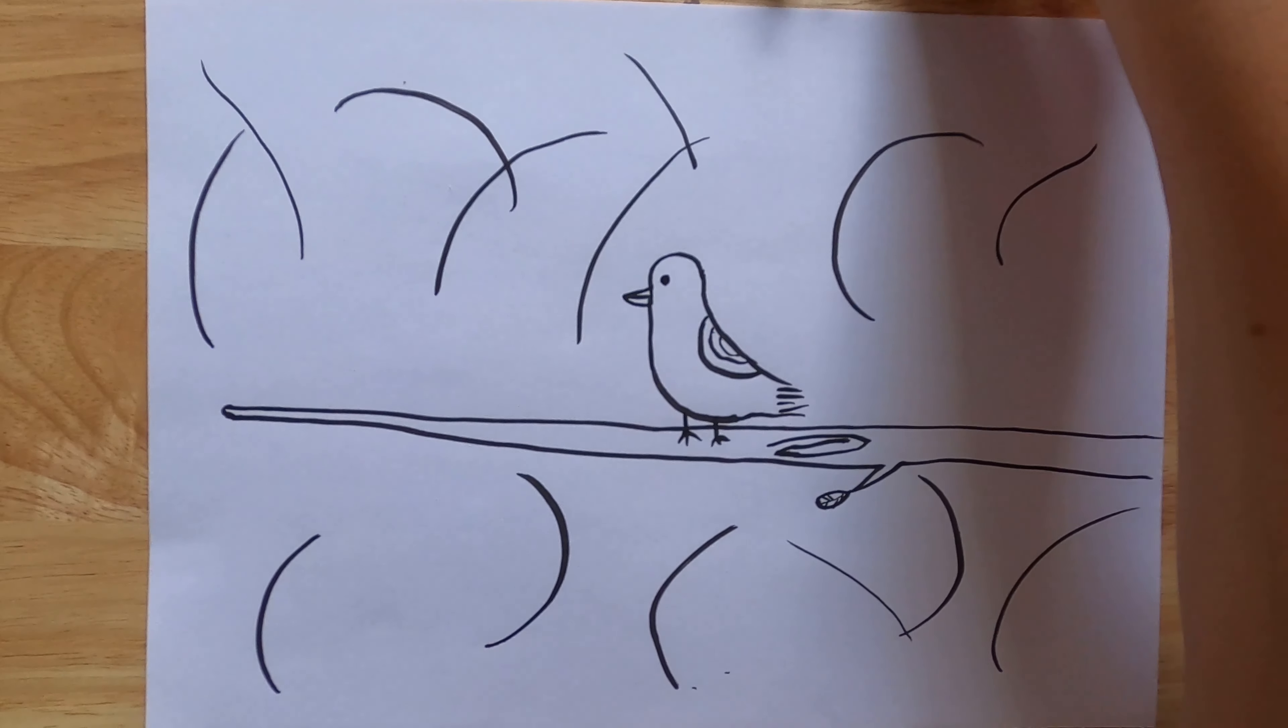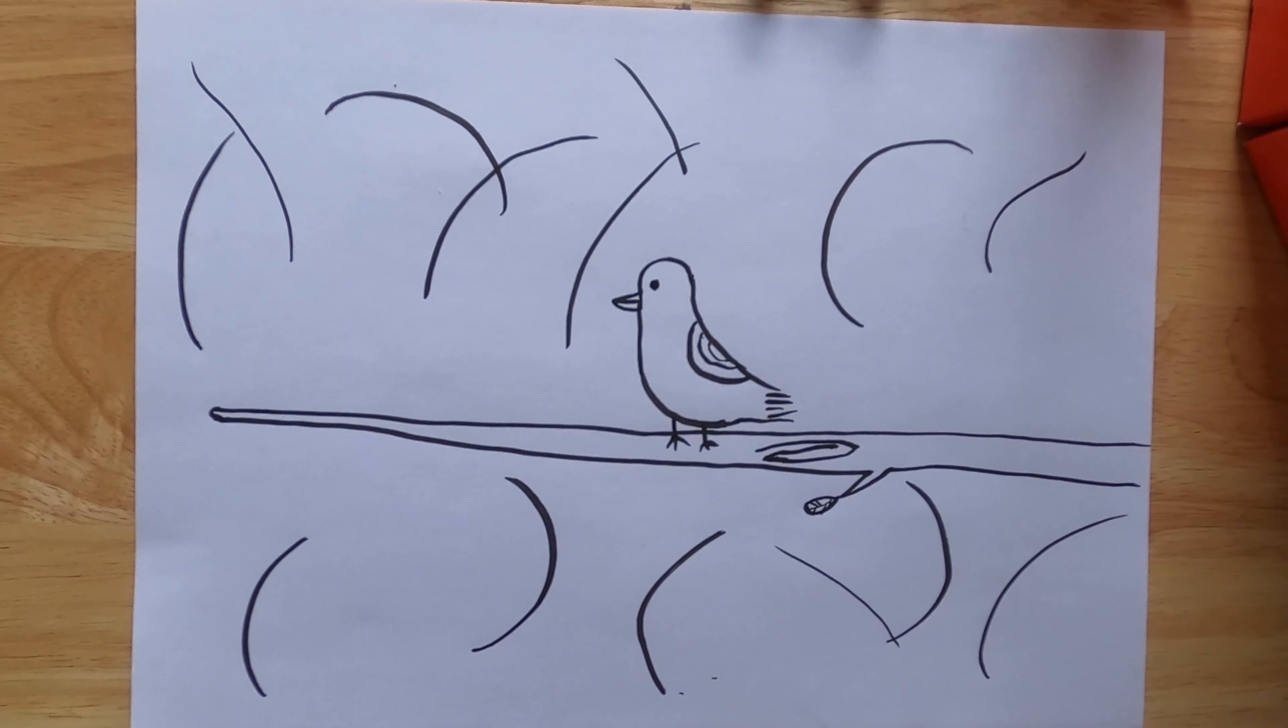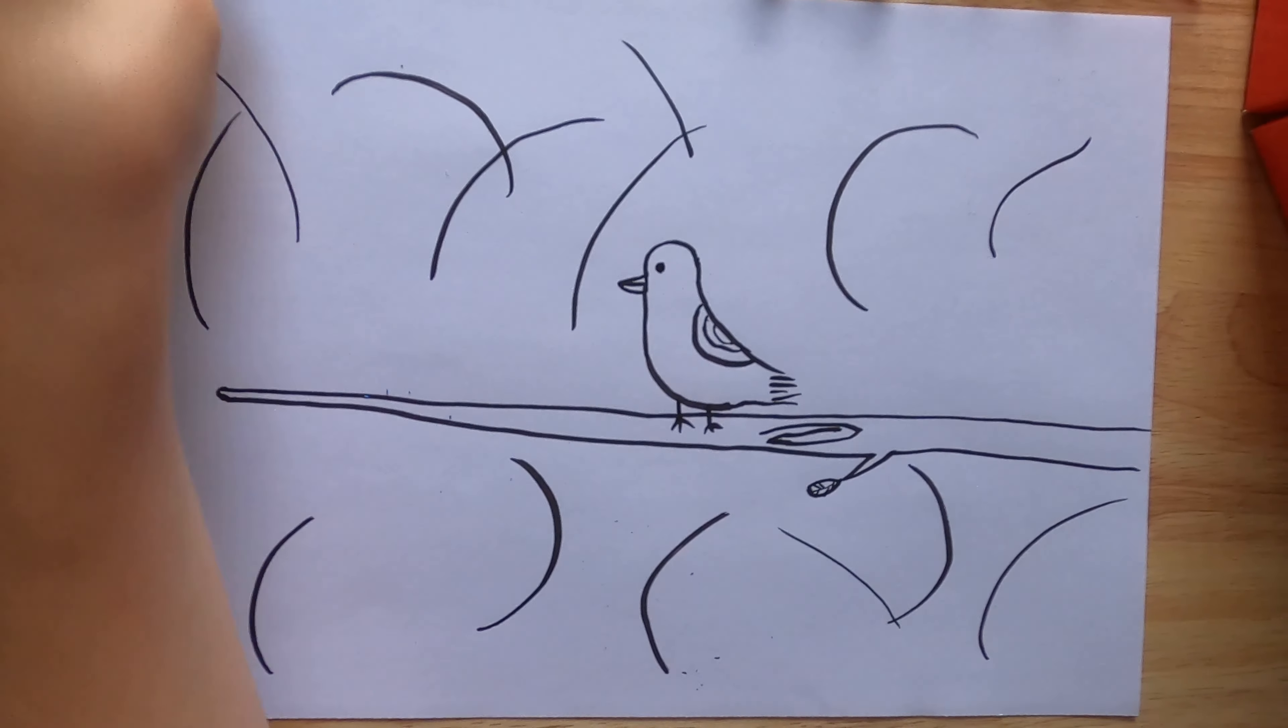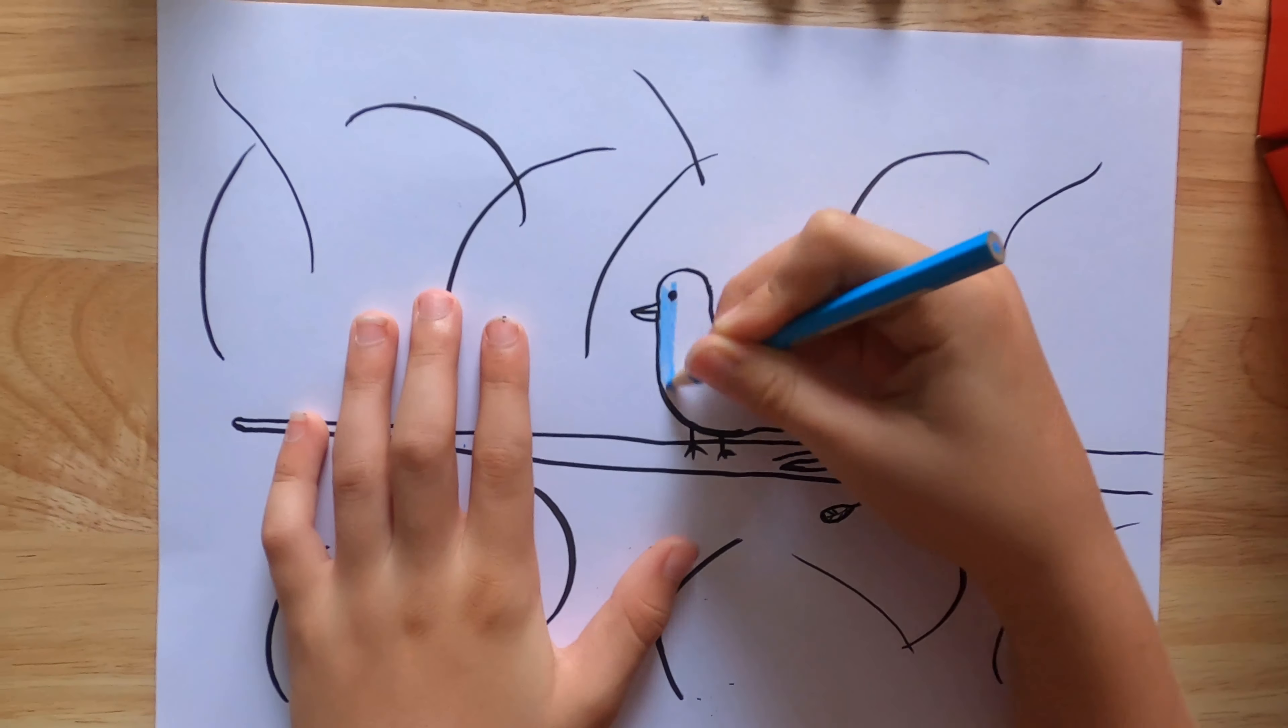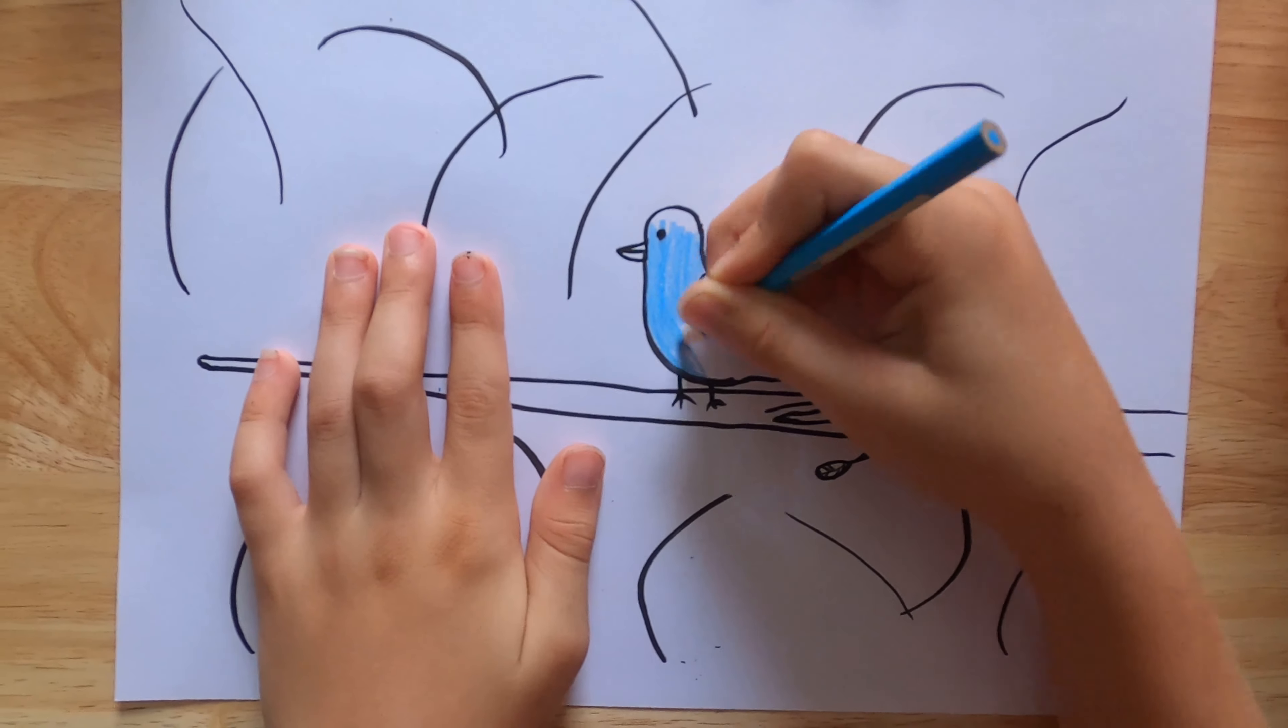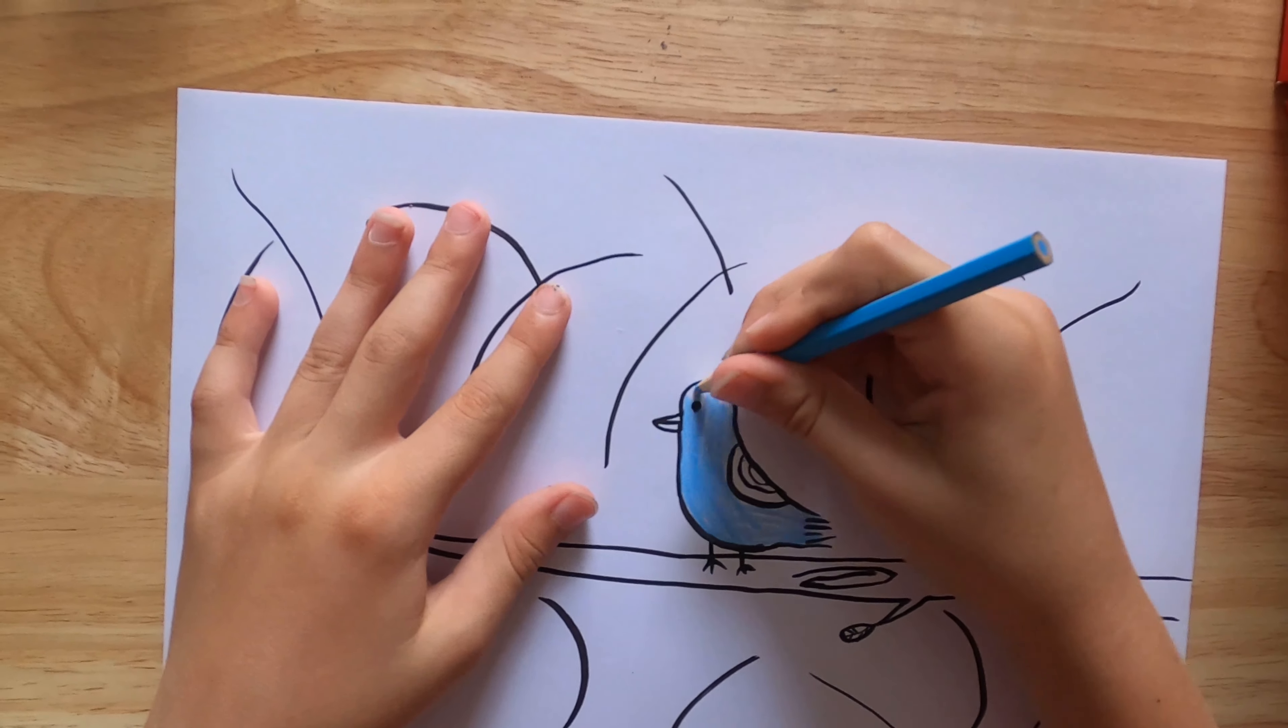Now we're going to start with the bird in the coloring. So you can put your pen or pencil away. We're going to start with a nice light sort of blue and just color the whole bird in this blue. You may need to turn the page if you can't color like you need to.